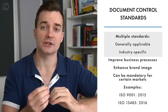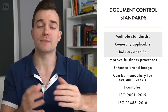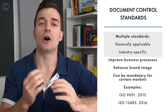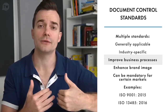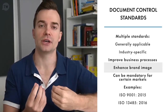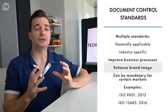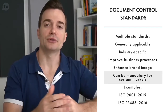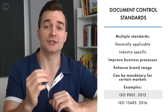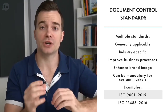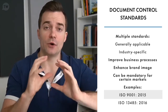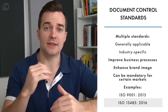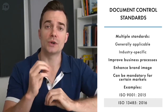Various document control standards have been developed. Some standards are applicable to every type of organization, while some are relevant only to specific industries. Companies can voluntarily adhere to standards, as doing so helps to improve business processes and enhances credibility and brand image. It's important to note that the adoption of document control may also be a mandatory requirement for operating in certain markets and countries. Some examples of document control standards are ISO 9001:2015, one of the most popular standards, focused on quality management, and ISO 13485:2016, which applies to medical device companies that operate in European Economic Areas.